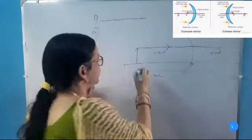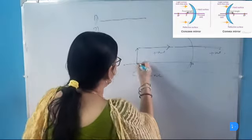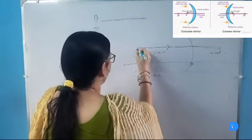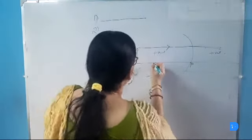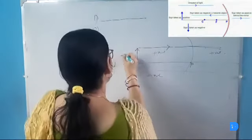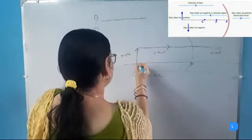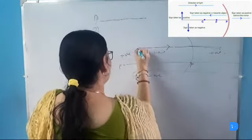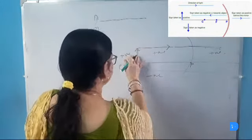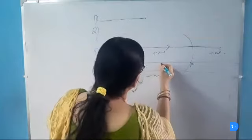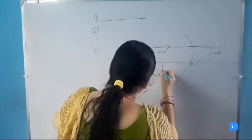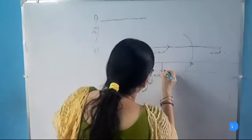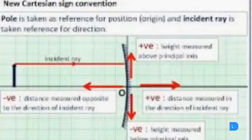The distances that are upward or perpendicular to the principal axis are considered as positive. This is the principal axis and the distance upward will be considered as positive. Again, the distances which are downward and perpendicular to the principal axis will be considered as negative.